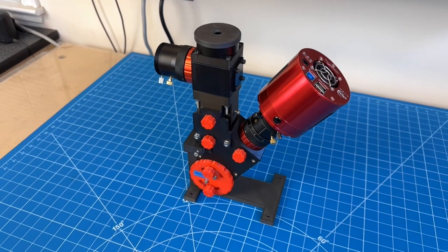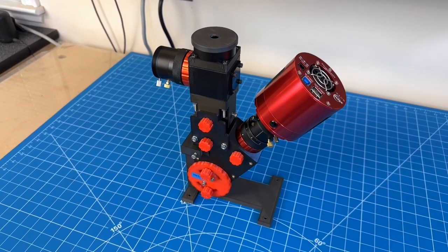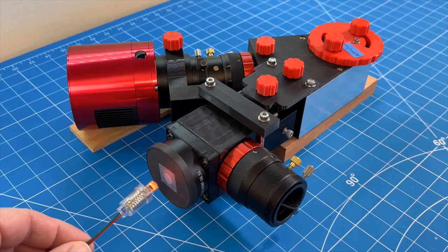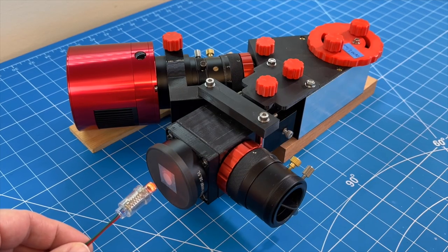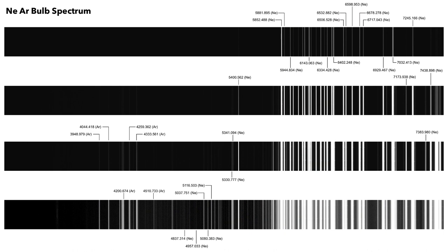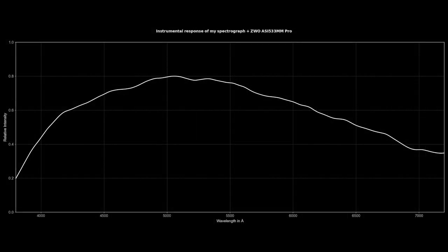To calibrate the 2D spectrum in wavelength, I captured the emission spectrum of a calibration lamp — in my case a neon argon bulb. And to calibrate it in intensity, I had to calculate the instrumental response of the spectrograph.